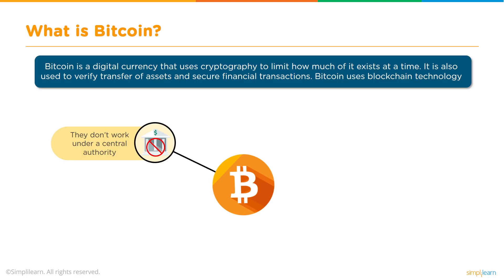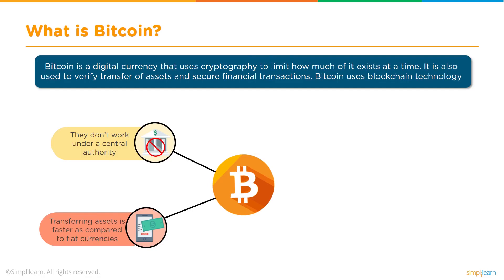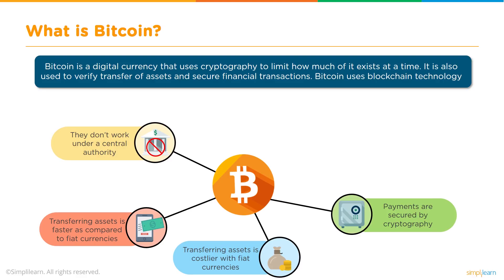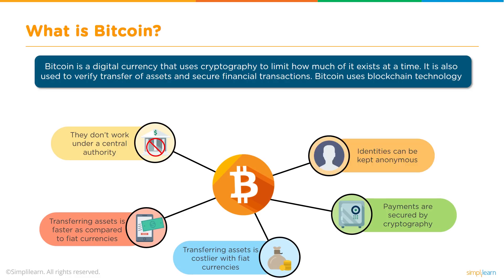The features of Bitcoin: it does not work under a central authority, and transferring assets is faster compared to fiat currency. The cryptocurrency market removes the need for intermediaries — the more intermediaries, the higher the transaction cost. Therefore, transactions with Bitcoin or other cryptocurrencies are bound to have lower costs compared to fiat currency. Payments are secured by cryptography using your private key and public key. Identities of parties transacting with Bitcoin are kept anonymous, and it uses blockchain as its underlying technology.